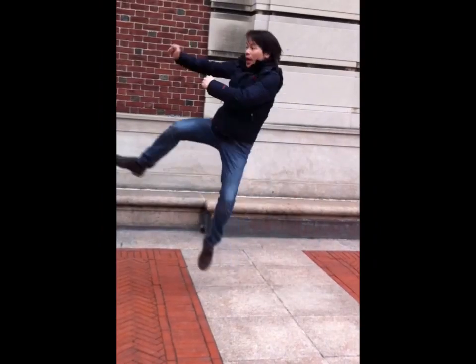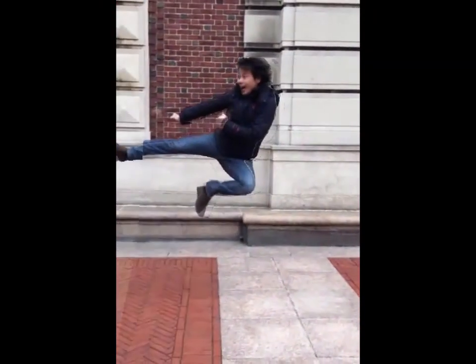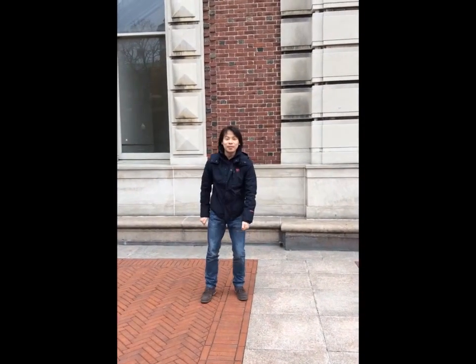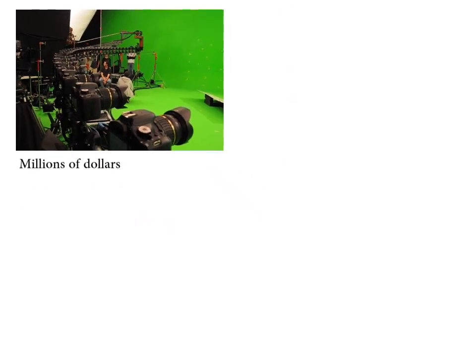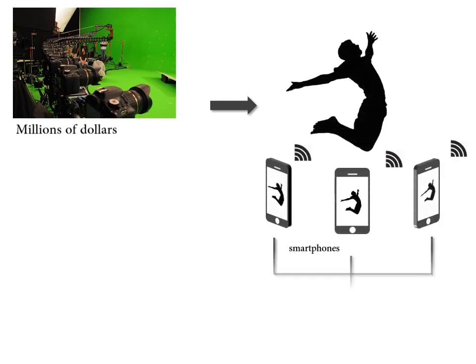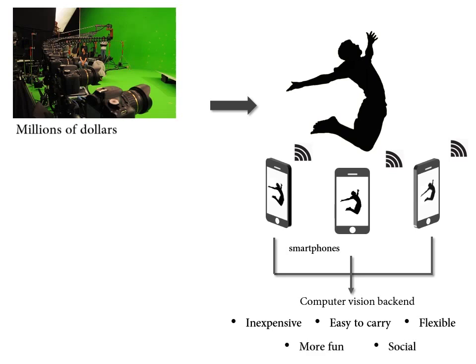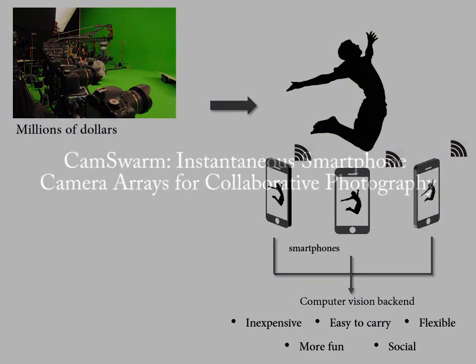In summary, we have presented CamSwarm, a lightweight software solution to allow multiple mobile devices to work collaboratively as a camera array to create bullet time videos. It brings the camera array photography experience to mass consumers for the first time, making mobile photography a more fun and social experience. Thanks for watching — please refer to our paper for more details.